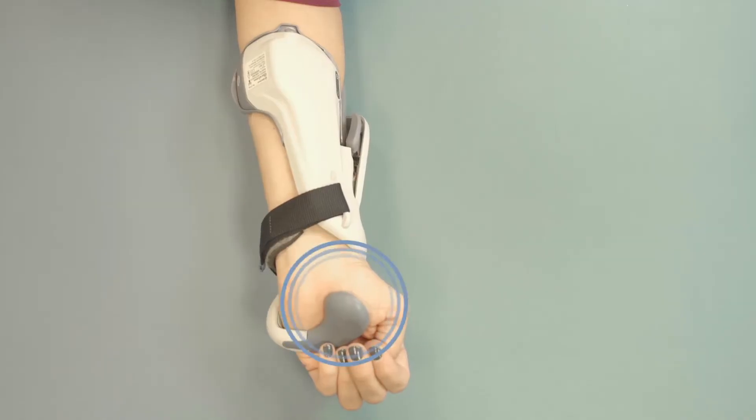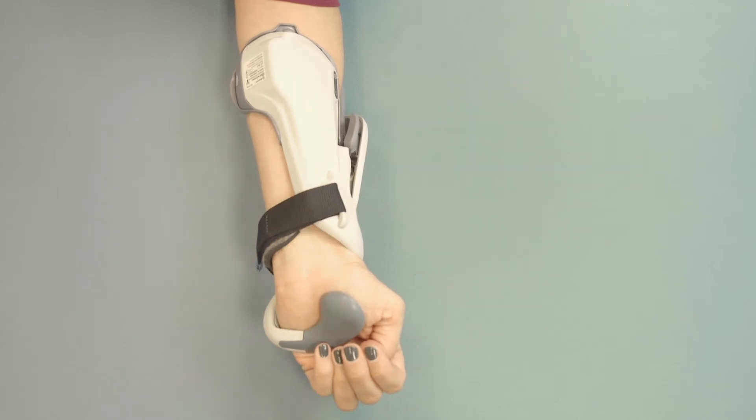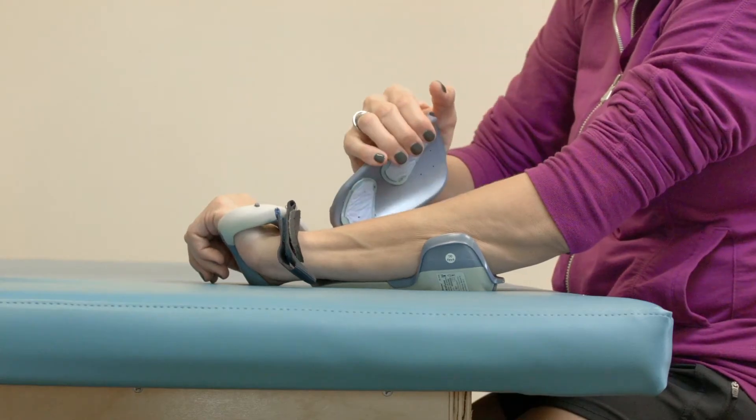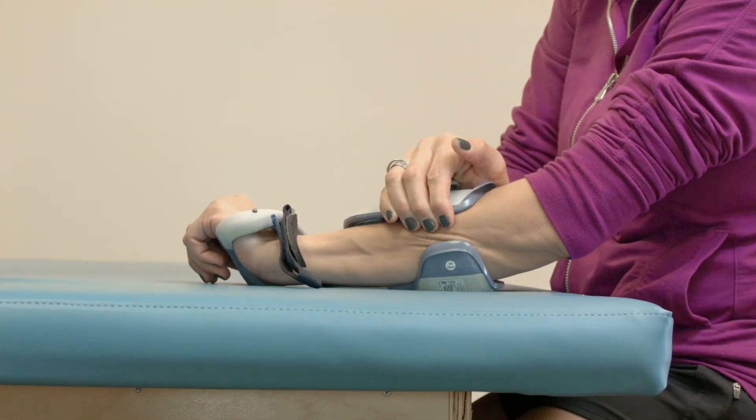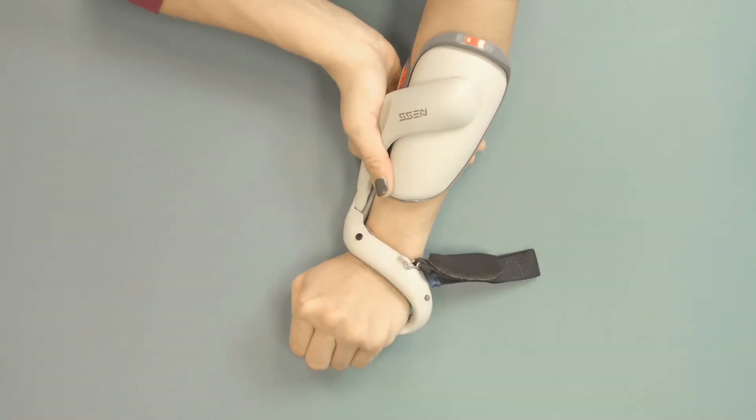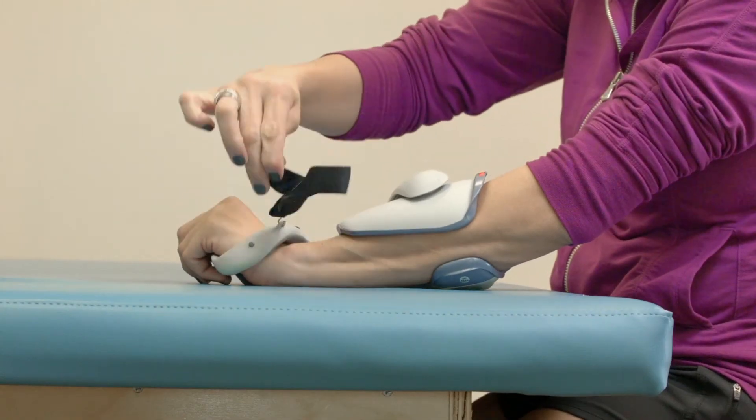Make sure the thenar electrode is at the base of your thumb at this point like so. Close the extensor wing and give it one final squeeze so that it's snug. Finally, fasten the wrist strap if appropriate.